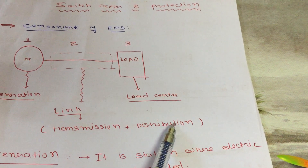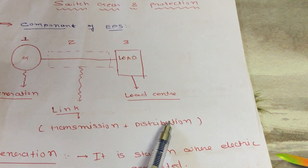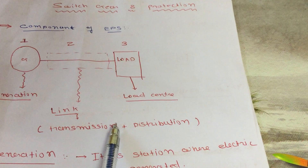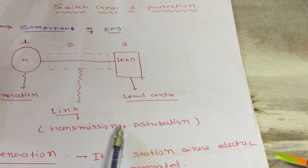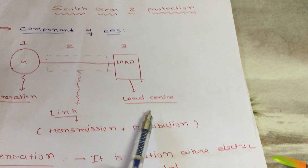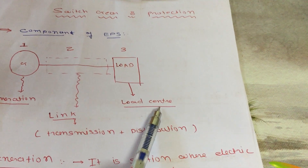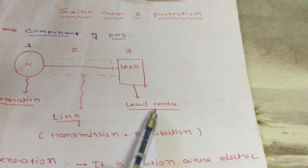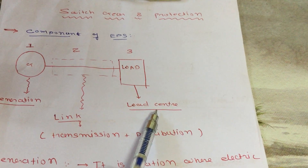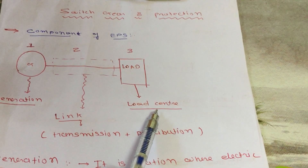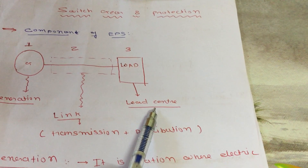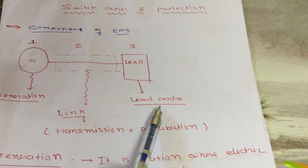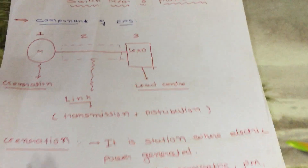This is the transmission line and this is the distribution line. We will study these in brief next. And the last one is the load center. Load center means nothing but the consumer — the place at which electrical energy is desired.